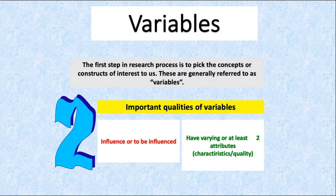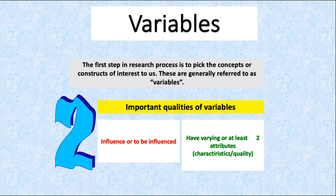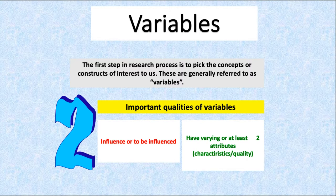The first important thing we need in quantitative research is variables. Variables should be developed from theories, concepts, models, and previous empirical research. When we raise a question in quantitative research, we go to the literature review to see what has been done and what has not, and from that we develop our variables and try to find the relationships between them. The first step in the research process is to pick the concept or construct of interest.